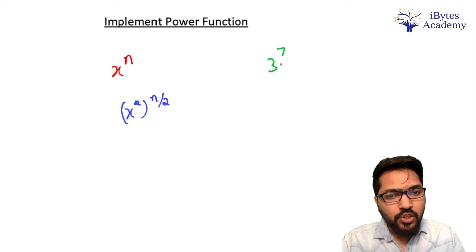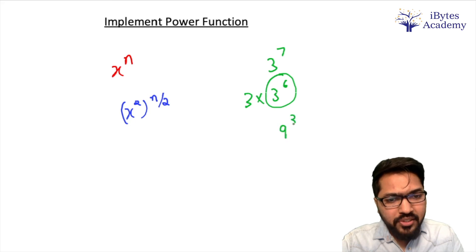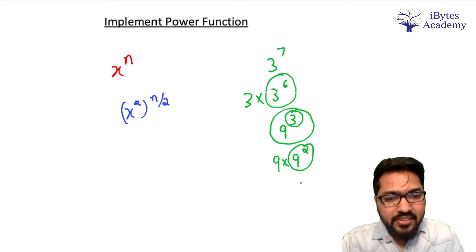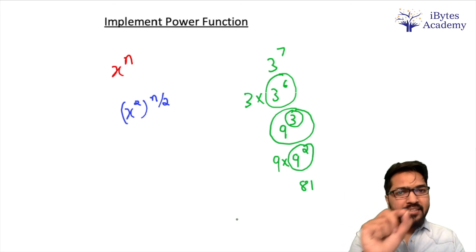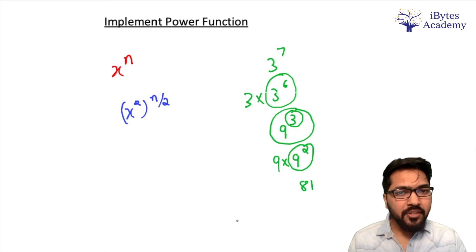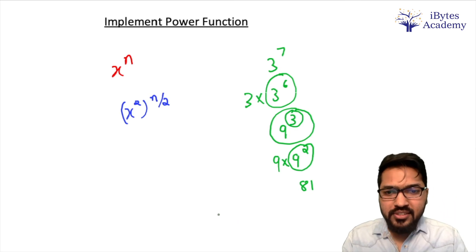We will make two cases whether our power is odd or even. If I was asked 3 to the power 7. In that case 3 into 3 to the power 6. Now further to solve this I would make it 3 square to the power 3, that is 9 to the power 3. Now it's odd power again. So again I am going to write this thing as 9 into 9 to the power 2. And further I will just write this as 81. Understand? As soon as we get odd power, convert to base times base to the power n minus 1. And when we get even power, convert to base square to the power n by 2. So this is how our work will be done. Let's quickly write the code for this.